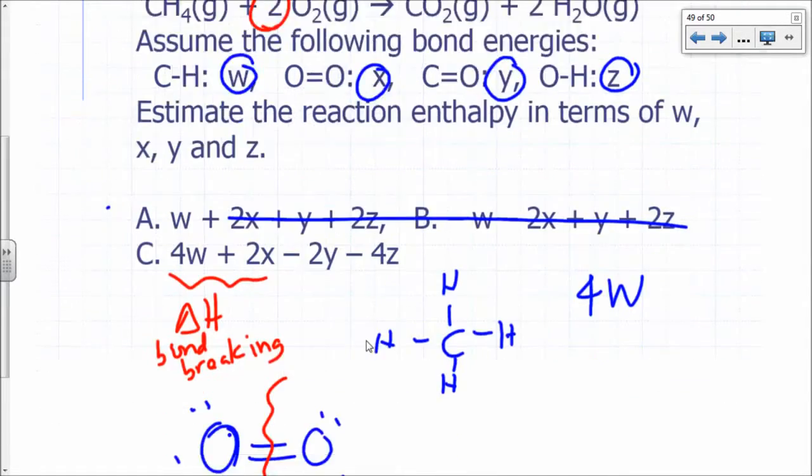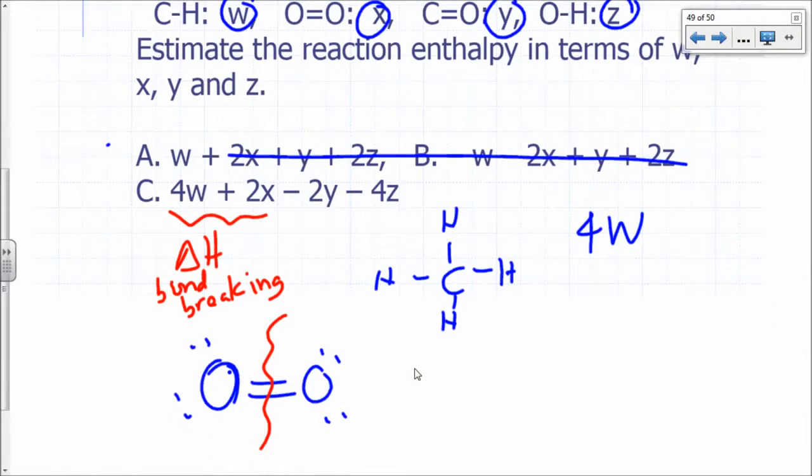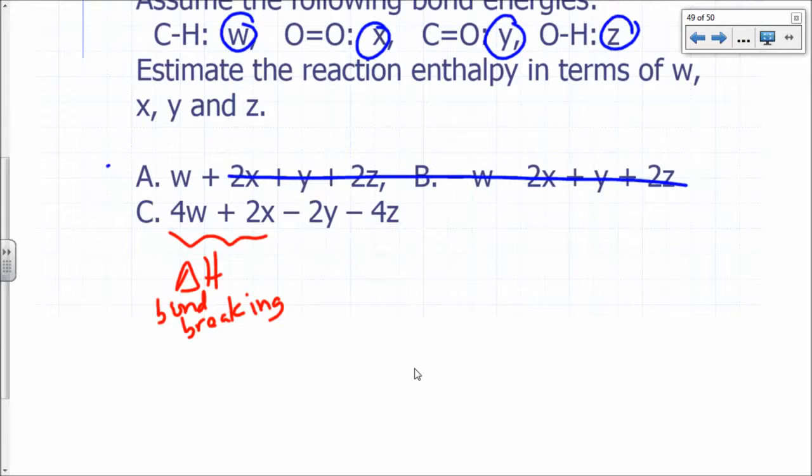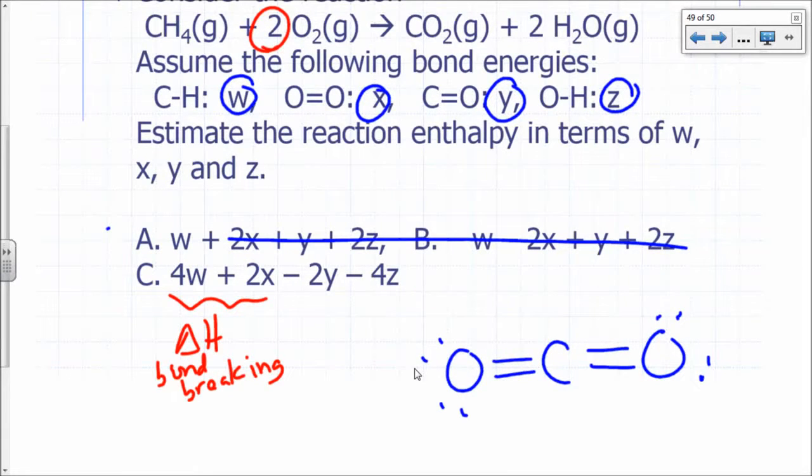Okay, what would be the delta H for bond formation? How much energy would be released in forming carbon dioxide? What's the Lewis structure for carbon dioxide? You've got two C double bond O's. So how many C-O bonds are you forming? You have one CO2, so two C-O bonds, right? One, two, so that's going to be 2Y would be released, so you have to put that as negative 2Y. So minus 2Y.